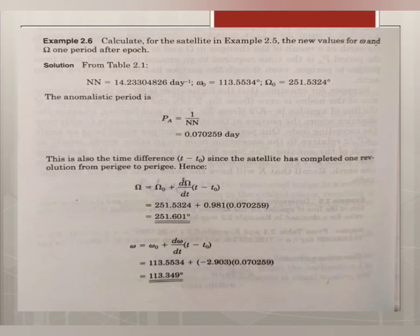We have to first of all find out the anomalistic period. When new values are asked for omega and ohm, we have to find out the anomalistic period because this is the time required for a satellite to complete one revolution from perigee to perigee. This time period is called anomalistic period.